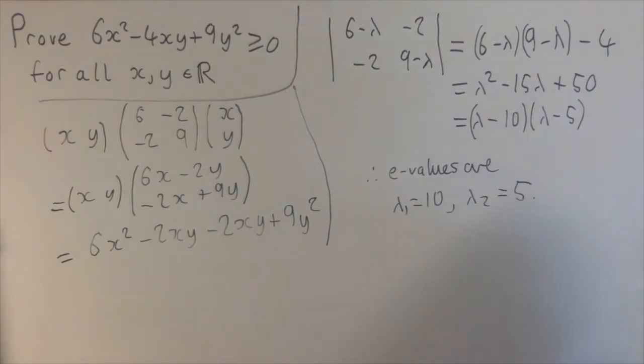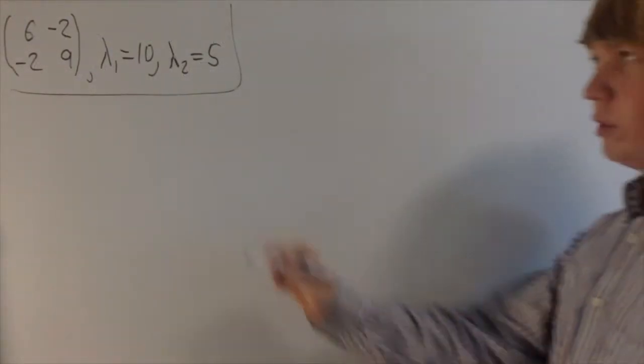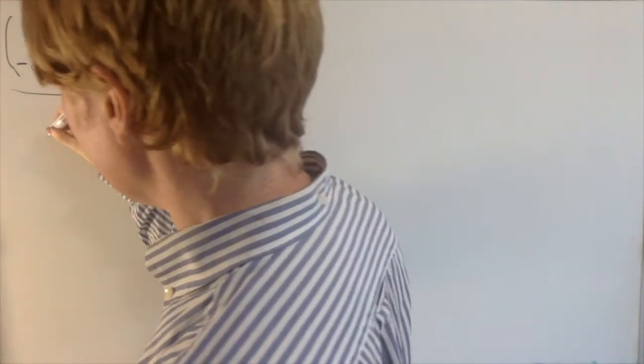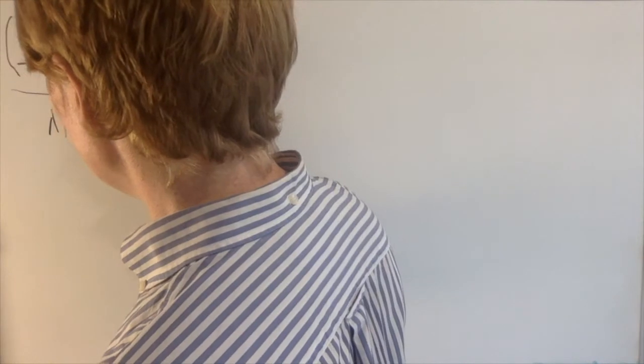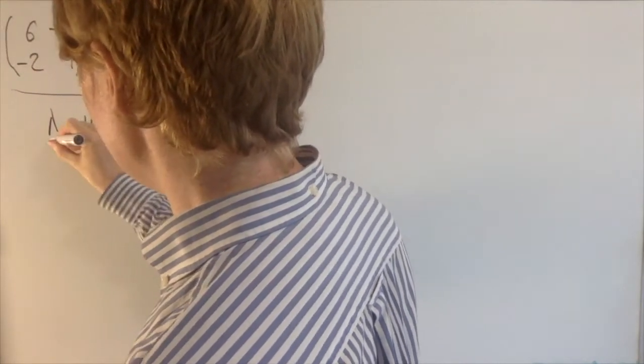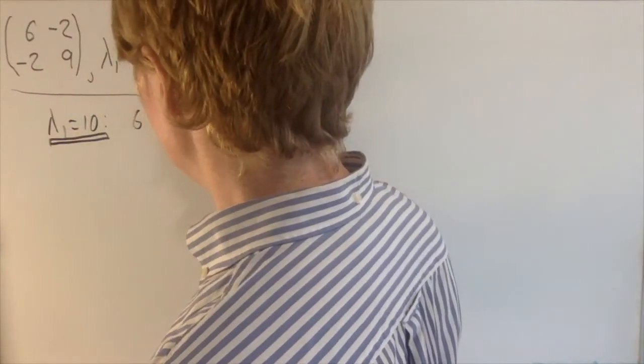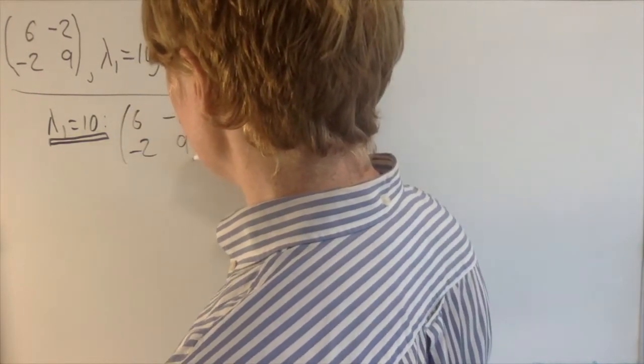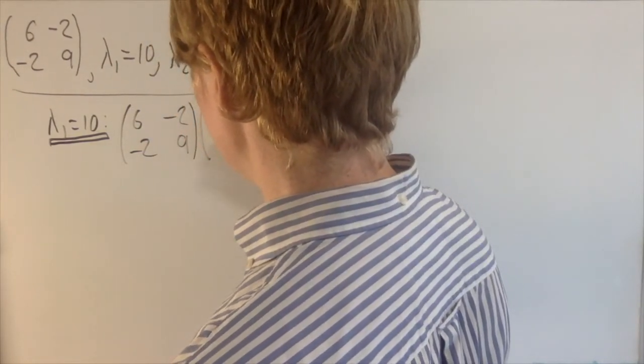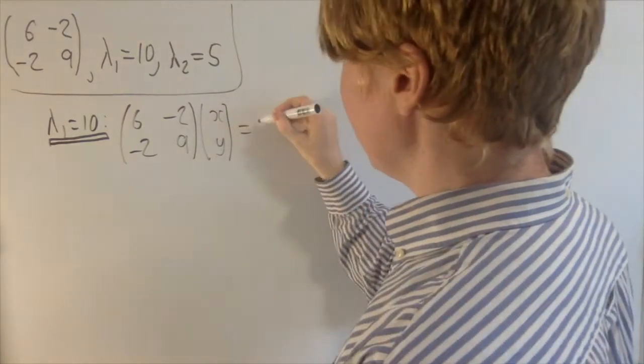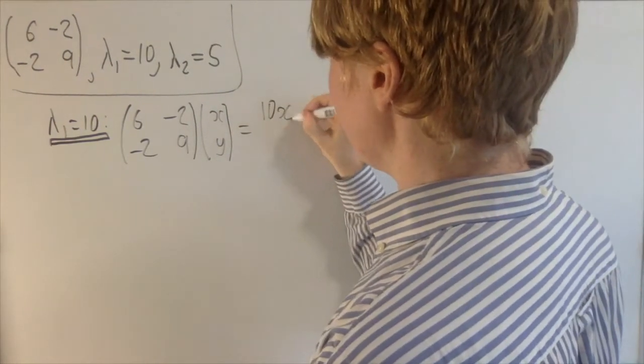So now we'll find the corresponding eigenvectors for these. We'll start with the first eigenvalue, which is 10. To find the corresponding eigenvectors to this, we just need to solve the usual matrix equation: 6, minus 2, minus 2, 9. Multiply this by a vector x, y. And this needs to be equal to 10 times the original vector, so 10x, 10y.